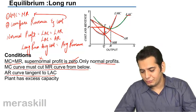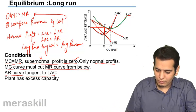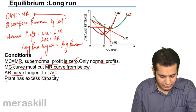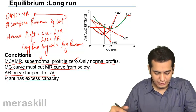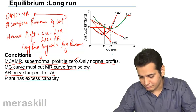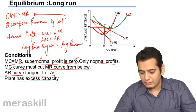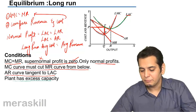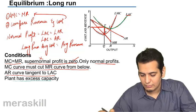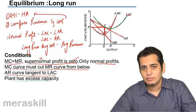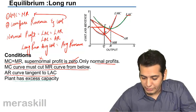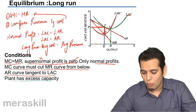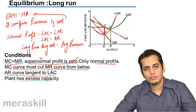The LAC curve is tangent to AR at the point T. And finally the plant has excess capacity. You can see that the cost is minimum at point L. Your LAC is minimum at point L.